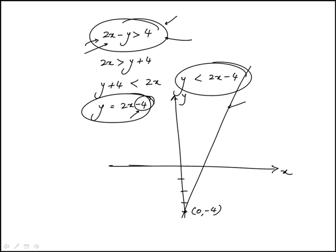Now this line is going to divide this plane into two regions. One where it would be y is less than 2x minus 4 and the other one would be y is greater than 2x minus 4.